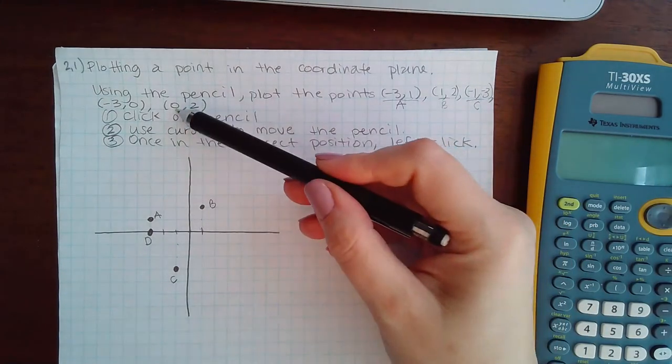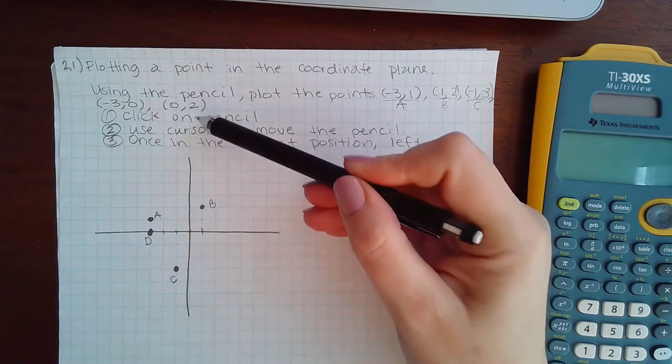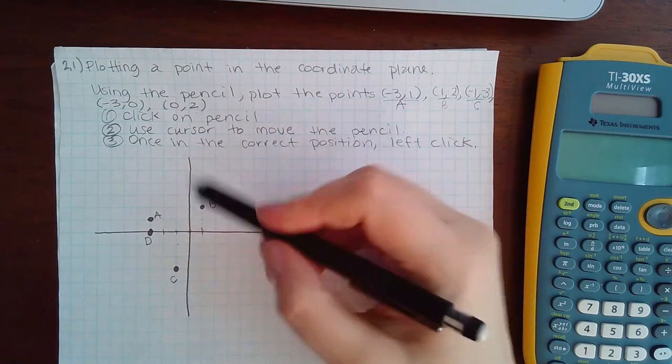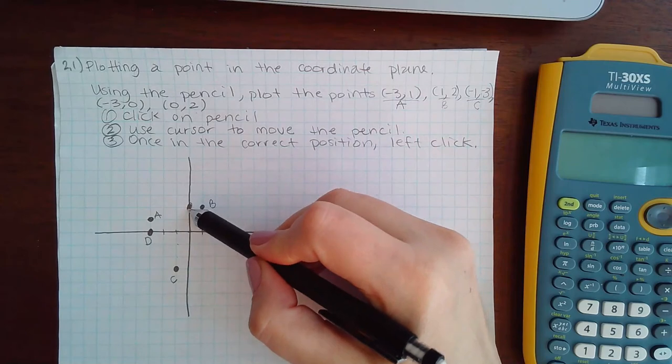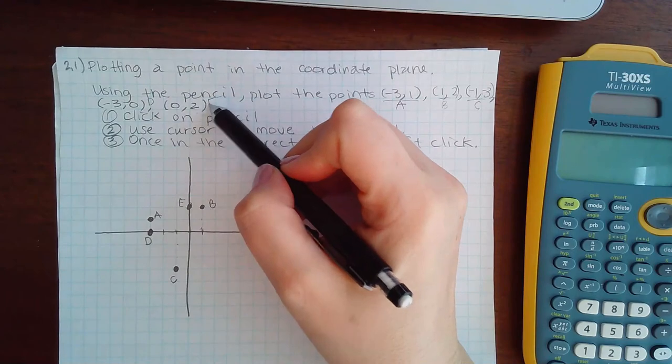Now this point (0, 2) means I do not move left or right for x, but I do go up positive 2 for y. We'll call that one E. So we're calling this one D and this one E.